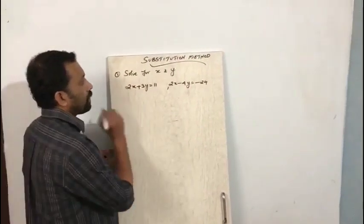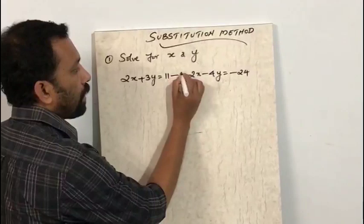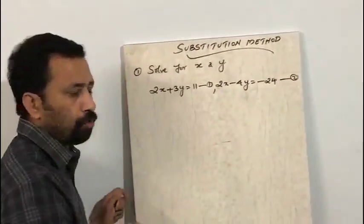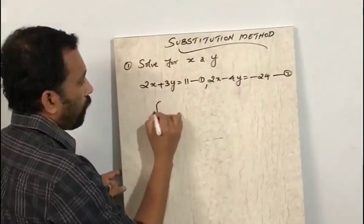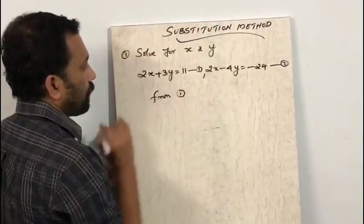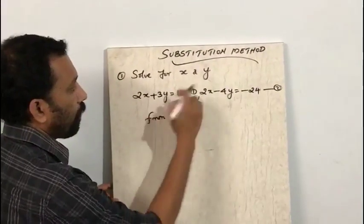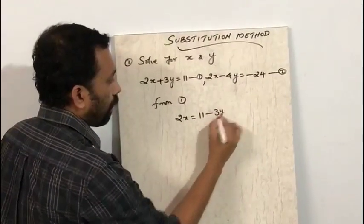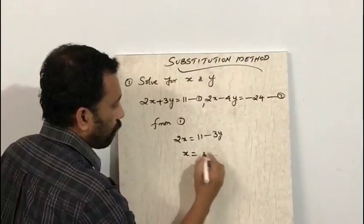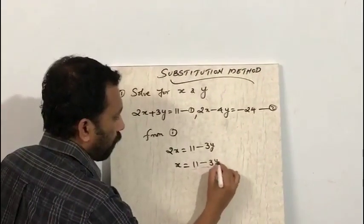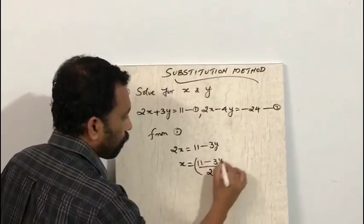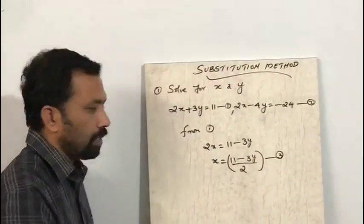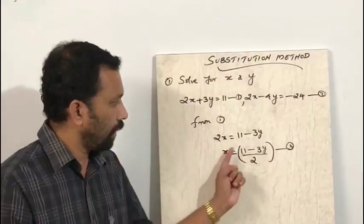The first step is to label them as equation number one and equation number two. From the first equation, transpose 3y to the other side: 2x is equal to 11 minus 3y, or x is equal to 11 minus 3y upon 2. We mark this as equation number three. This is called x in terms of y.